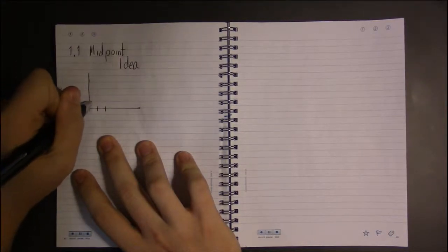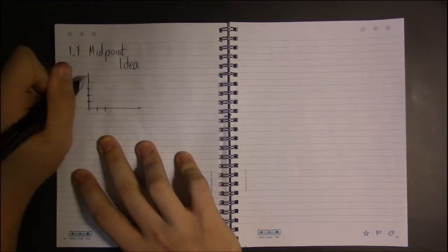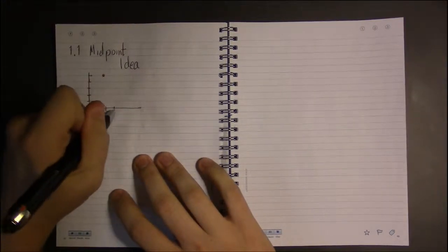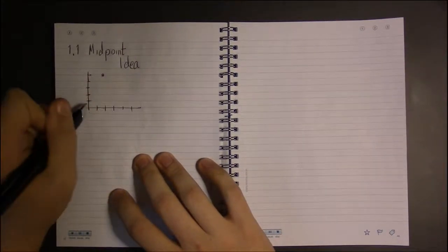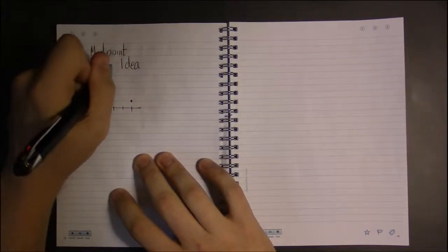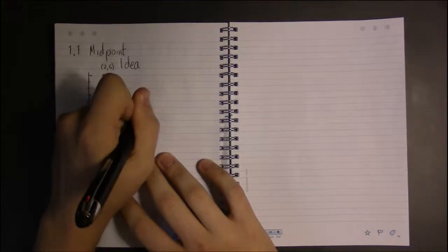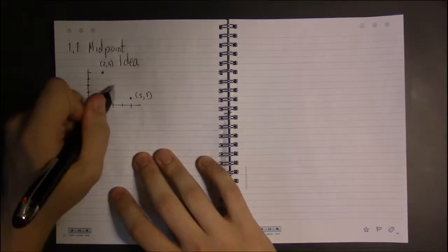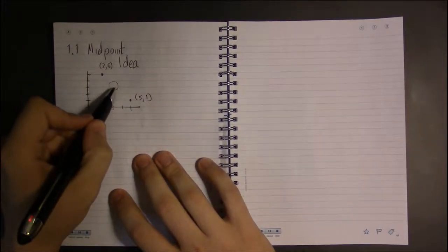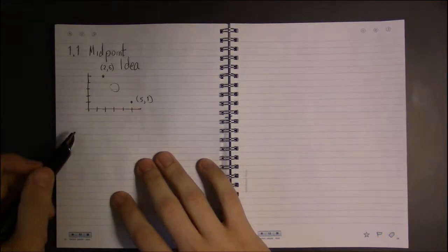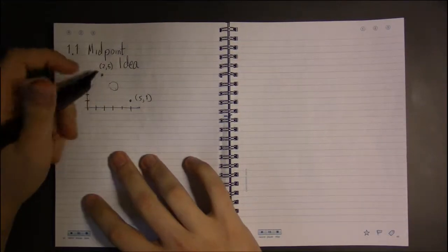the point (2,5) right about here and the point (5,1). So this is (2,5) and this is (5,1). The question is, what's the point that's halfway in between these two? Well, let's simplify it a